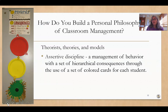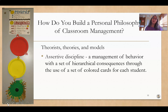Our second big theory when it comes to classroom management is called assertive discipline — managing behavior by using a set of increasing consequences. Usually what teachers do for this is some sort of a color-coding system. The picture on the side shows what we call a stoplight system. All students start the day on green.